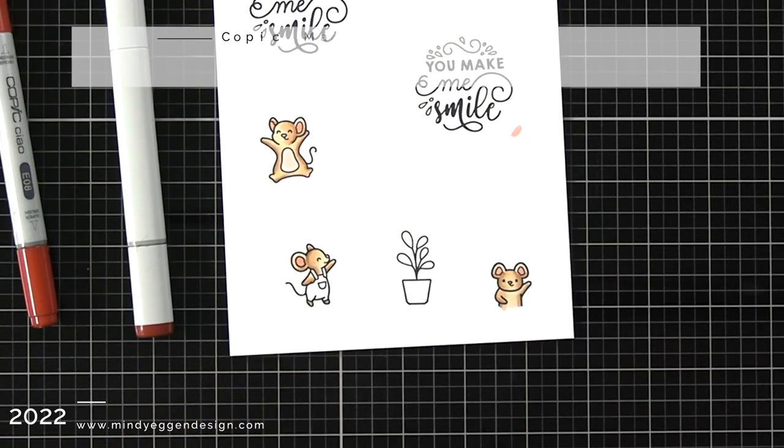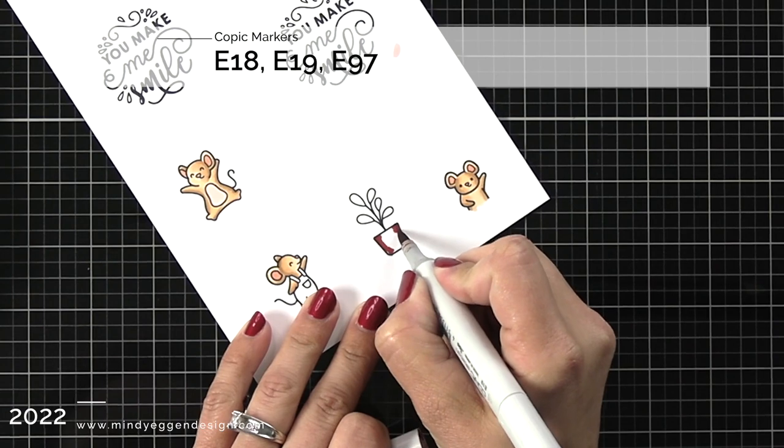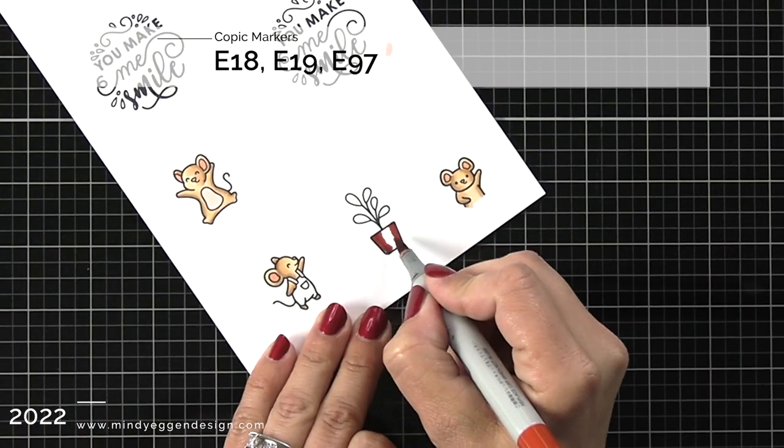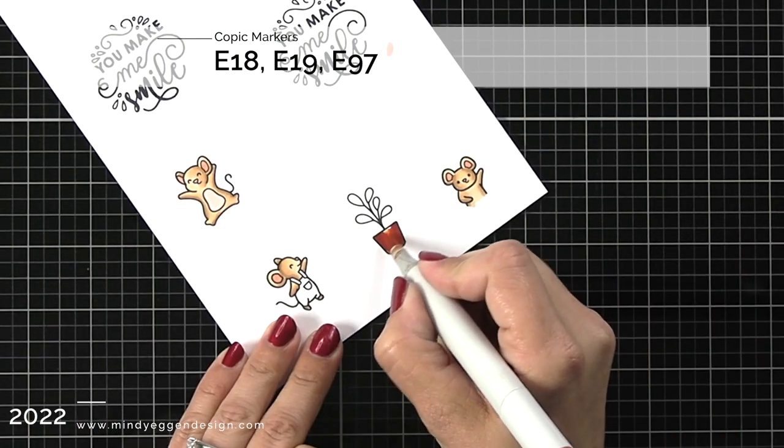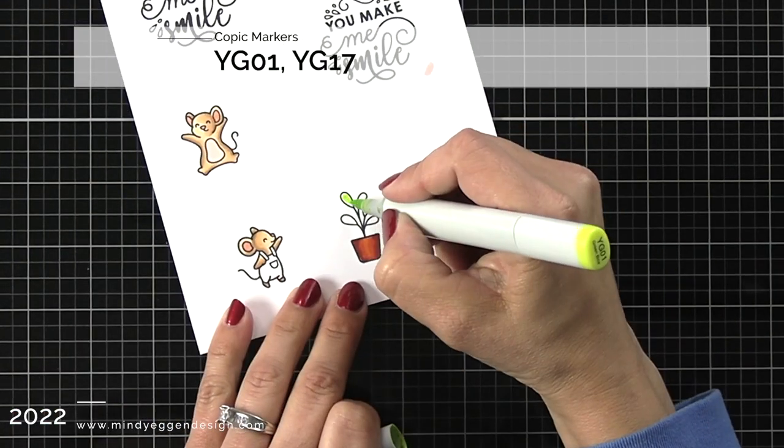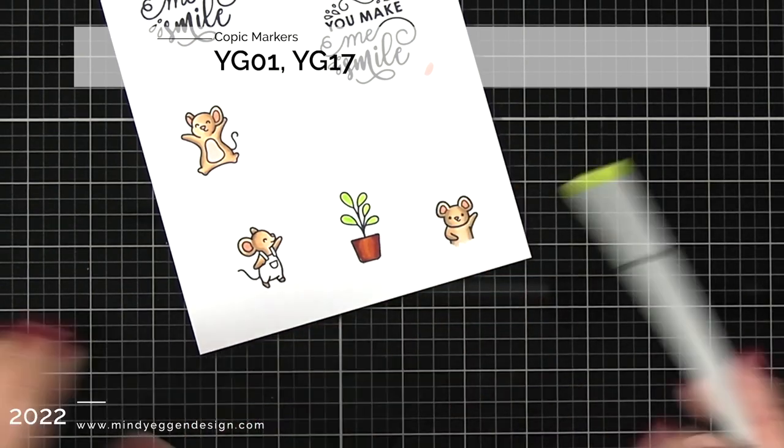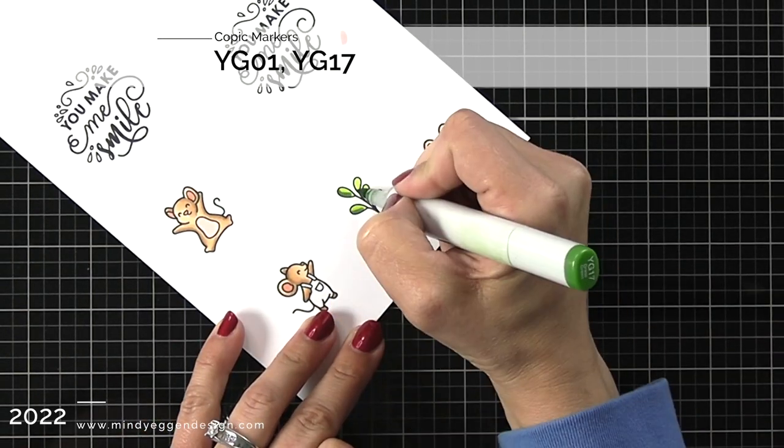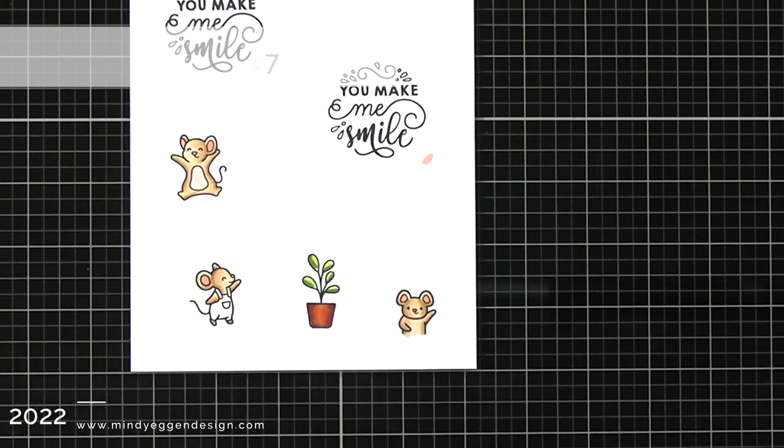For my plant, I'm going to use a reddish brown combo. I have E18, E19, and E97 and then bright greens for my plant, which I will be using YG01 and YG17. I started with the lightest color first and then just added a line for the shadow.